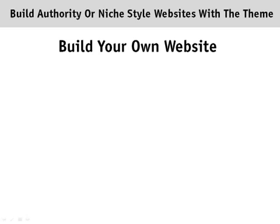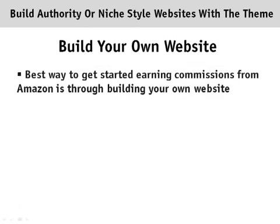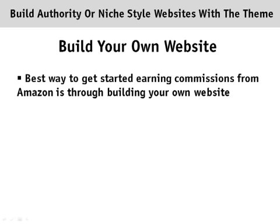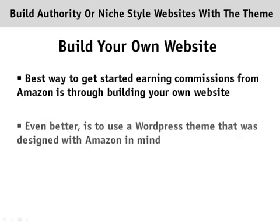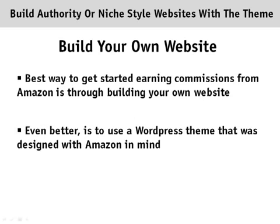One of the best ways to take advantage of Amazon's affiliate program is to build your own website. And what would be even better is to use a WordPress theme on that website that was designed with Amazon in mind. And that's what we've done with this new theme.